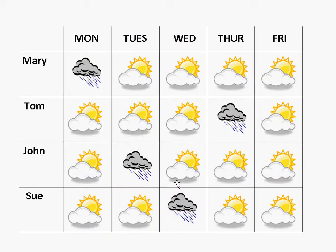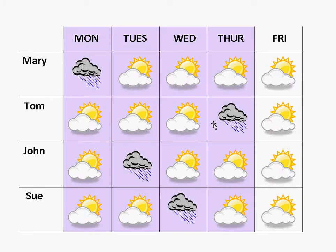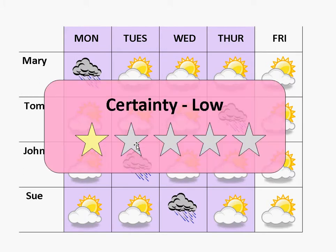Let's consider another example with a different forecast. It is less clear here when it will rain next. The forecast suggests it may be as soon as Monday or as late as Thursday. If we had to pick a single date, we might choose Tuesday or Wednesday because it's in the middle. Because the forecasts don't agree, we can't be too certain about the estimate — the certainty would be low. We may guess it will next rain on Tuesday, but we can't be too confident.